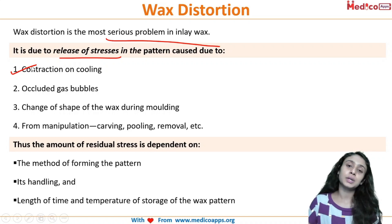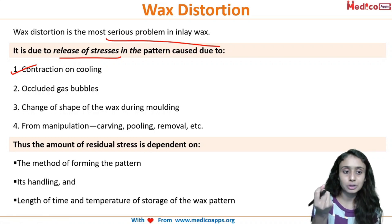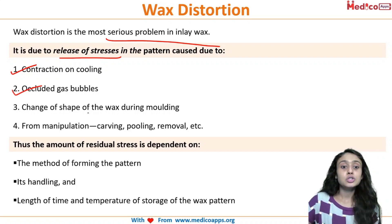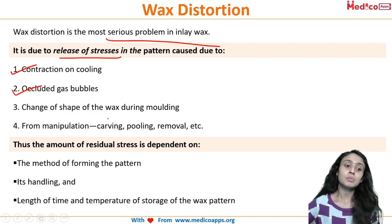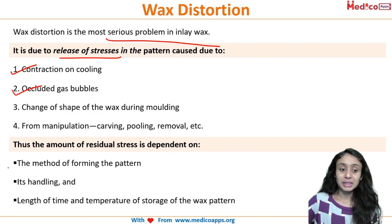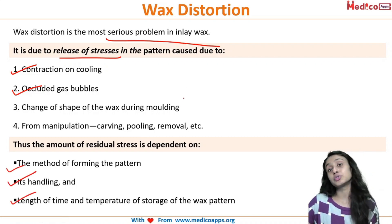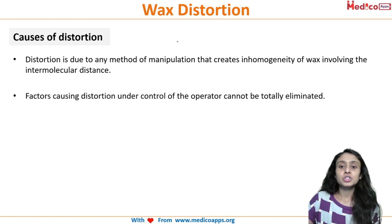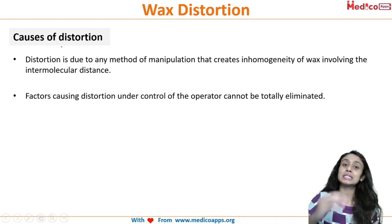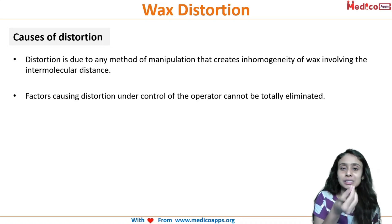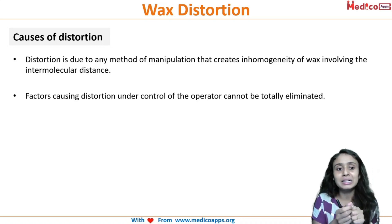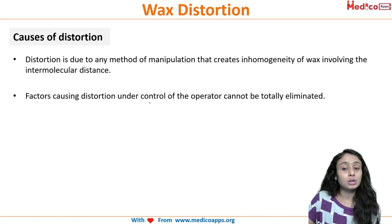Wax distortion is due to the release of stresses. As the wax cools from 37 degrees to room temperature, some contraction occurs. There can also be gas bubbles, change of shape during molding, and stress from manipulation — carving, cooling, and removal can cause mild chipping or differences in the wax pattern. The amount of residual stress depends on the method of forming the pattern, handling, length of time, and temperature of storage. The causes of distortion include change in temperature, release of stress, and contraction during handling and removal.